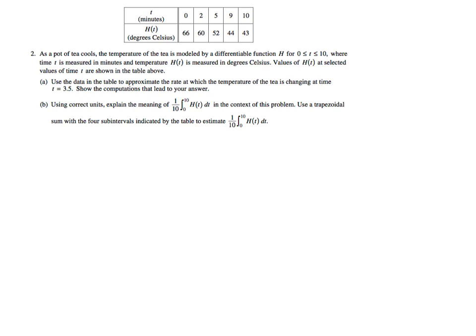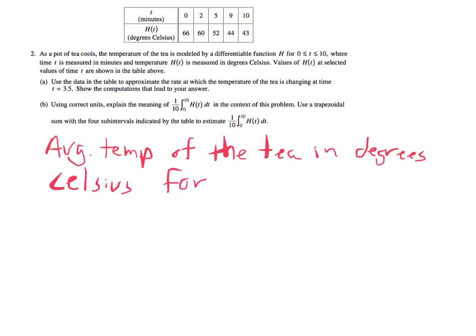It just so happens that H represents degrees. So this means the average degrees Celsius of the temperature of the tea for this 10-minute interval. It represents the average temperature of the tea in degrees Celsius for time between 0 and 10. That's what it means. We should just recognize this format where this is 1 over 10 and this is from 0 to 10, and we have the integral as the formula for finding the average value of a function. It just so happens that this function represents temperature of the tea in degrees Celsius.